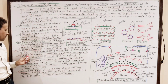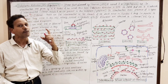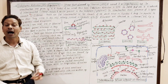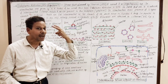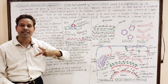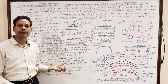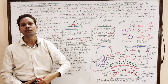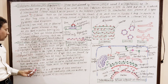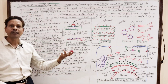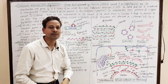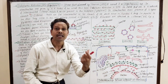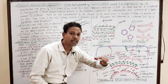The third modification is myeloid bodies. These myeloid bodies are present in retinal cells of the eye. In retinal cells, these myeloid bodies are modifications of endoplasmic reticulum which act as photoreceptors to receive light. The fourth modification is annulated lamellae. These annulated lamellae are located just near the nucleus and may be in the form of free vesicles or in the form of a chain of vesicles.